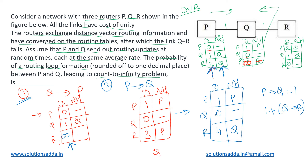The count-to-infinity problem only occurs when P shares its information to Q first. In Case 1, if Q sends first, the problem is resolved immediately. It depends on which event takes place first, and since both happen at random times with the same average rate, both have equal probability. Therefore, the probability of falling into the count-to-infinity problem is one-half (1/2). Some sources say the answer is 1, claiming the problem always occurs regardless of order, but as explored here, it actually depends — so the correct answer is 1/2.